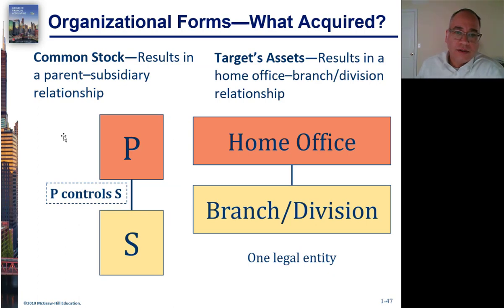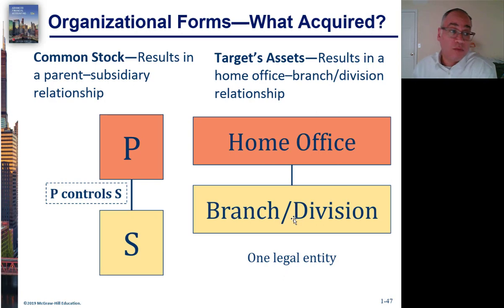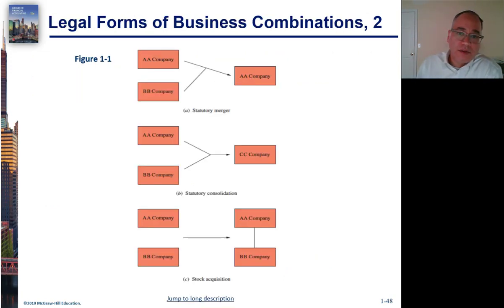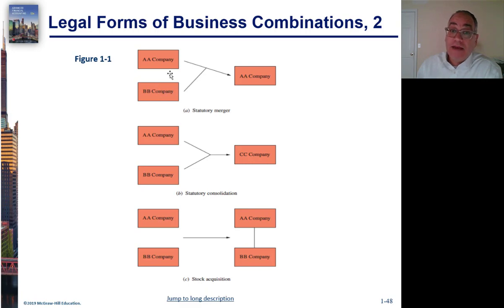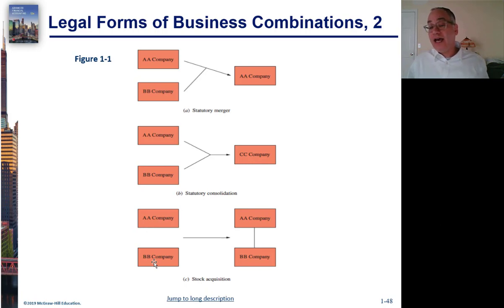Let's look at some pictures. When you buy common stock, there's a parent-subsidiary relationship. But if you buy the assets, you get all the assets of the sub, and it all becomes one company. To review: a statutory merger is where B's assets get mixed in with A, and only A survives. A statutory consolidation is where you create a new company C, and all of A and B's assets get put into C. With a stock acquisition, A buys the stock of B, giving you a parent that owns a subsidiary as two separate corporations.